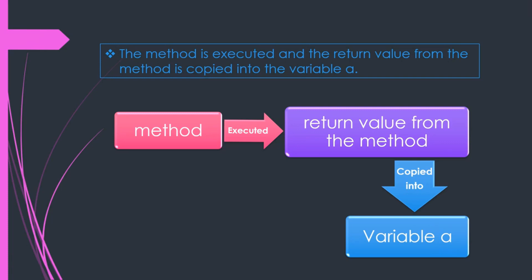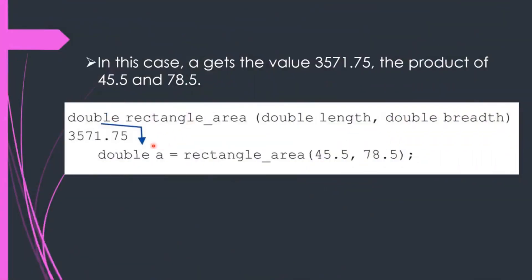Variable a indicates the rectangle area. Since a variable changes its value at runtime, when we execute the method, variable a will take the value returned after multiplying 45.5 and 78.5 — these two values are the arguments used to calculate the rectangle area, which is the product of length and breadth. So a will get the value 3571.75.